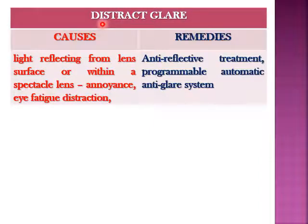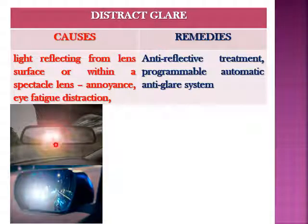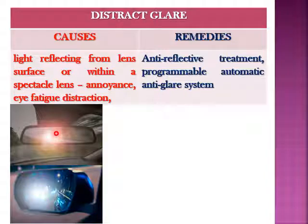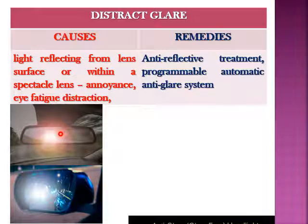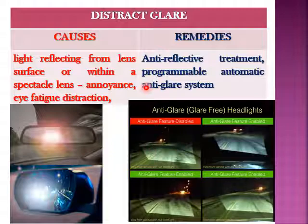The last type is distract glare. It is the light reflecting from a lens surface or within a spectacle lens, which may result in annoyance, eye fatigue, and distraction. In this picture, there is scattering as well as reflection of light beams — both processes result in poor visibility. To overcome such glare, an anti-reflecting treatment or a programmable automatic anti-glare system is developed in vehicles. Thank you.